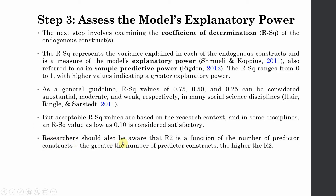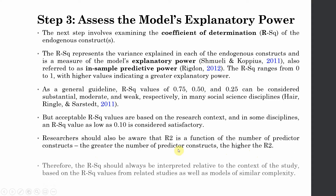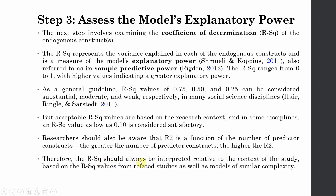Researchers should be aware that R-square is a function of the number of predictor constructs — the greater the number of predictor constructs, the higher the R-square. Therefore, R-square should always be interpreted relative to the context of the study, based on R-square values from related studies as well as models of similar complexities. You should also keep note of what the R-square of an endogenous construct is in a similar study.